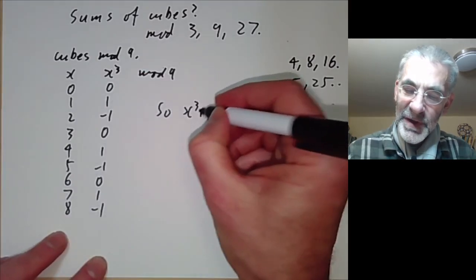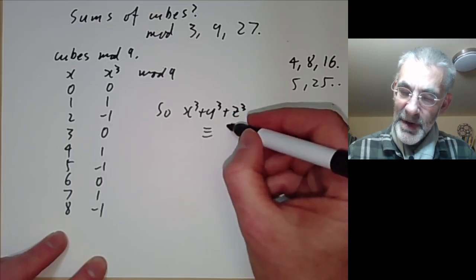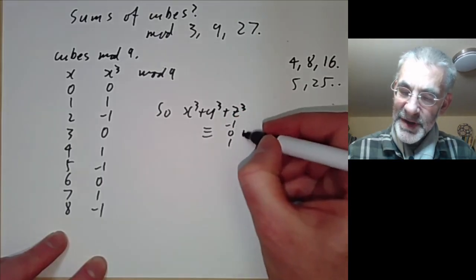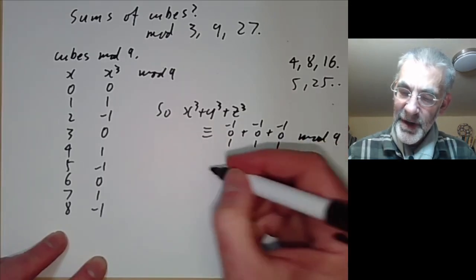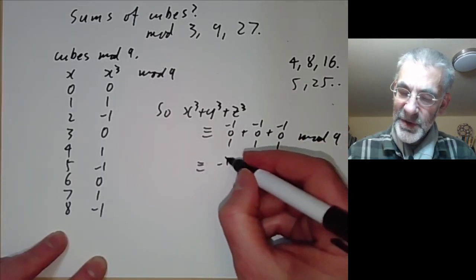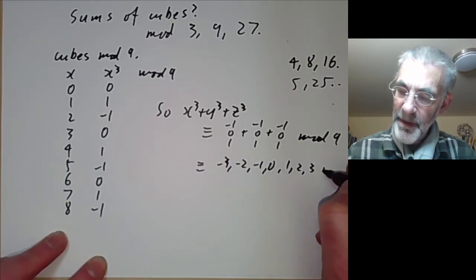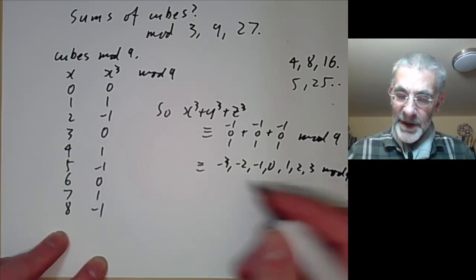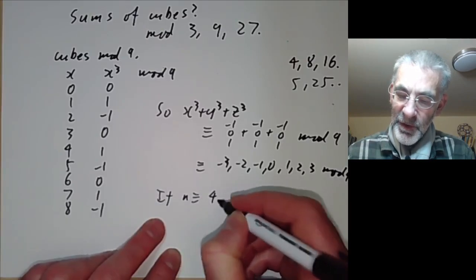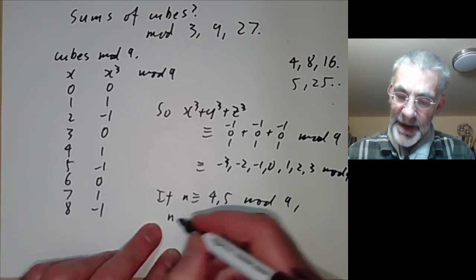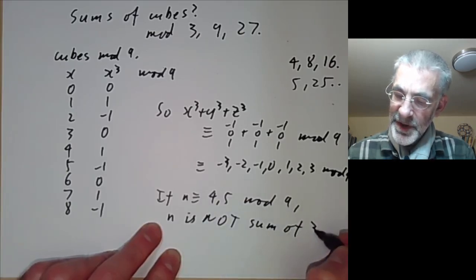So x cubed plus y cubed plus z cubed is congruent to some combination of minus 1, 0, or 1 added three times, giving values from minus 3 to 3 modulo 9. The possible residues are minus 3, minus 2, minus 1, 0, 1, 2, 3 modulo 9. We see that 4 and 5 modulo 9 are not achievable, so if n is congruent to 4 or 5 modulo 9, then n is not a sum of three cubes.